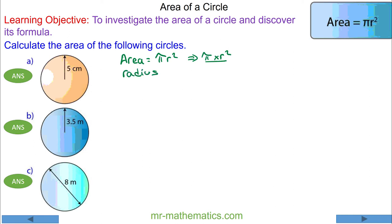For question a, the radius is 5 centimeters. The area is π multiplied by 5², and 5² is 5 times 5, so 25π centimeters squared.